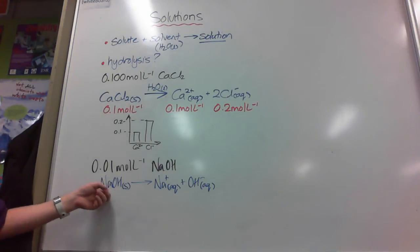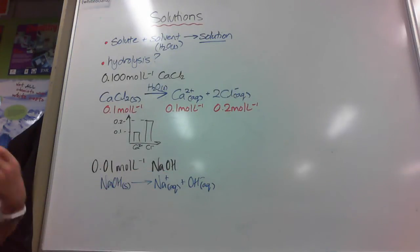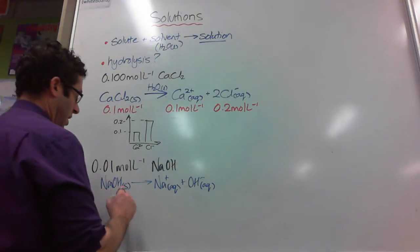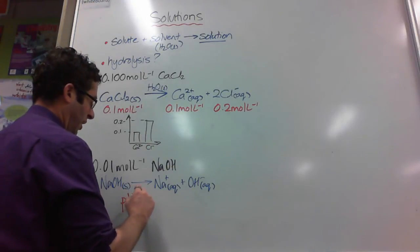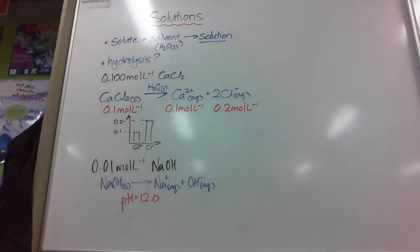Again, you could graph them and these two bars would be the same height, both at 0.01. You'd be able to use these numbers to predict that its pH would be 12. Part of this unit, we will get to the point where you can tell me why that's got a pH of 12.